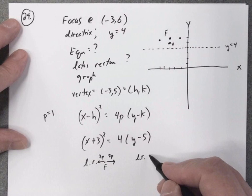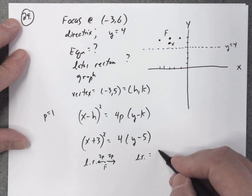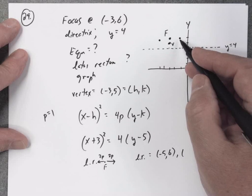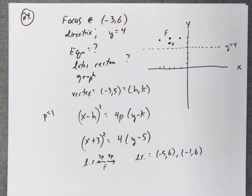So the actual latus rectum points would be, so this is going to be (-5, 6) and then this one, (-1, 6). So those are the two points of the latus rectum.